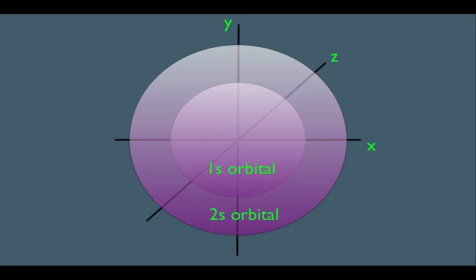And there just so happens to be a 3s orbital, a 4s, 5, 6, you can keep going. They'd all simply just be bigger and bigger spheres.